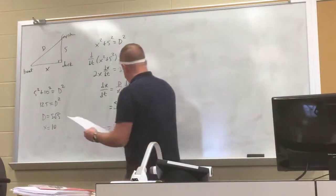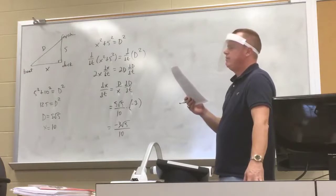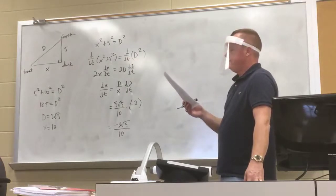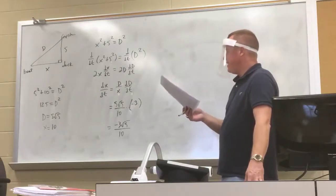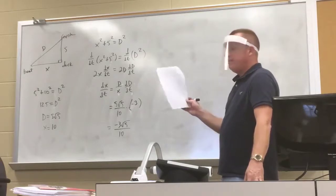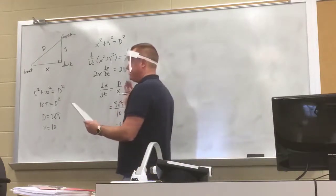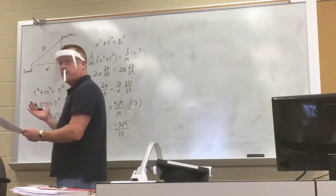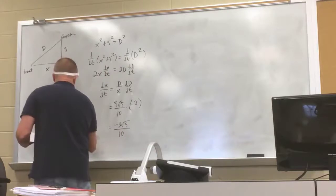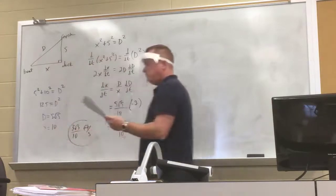The negative indicates the boat is moving toward the dock. Since the question asks how fast the boat is traveling — which is speed, always positive — the answer is 3√5/10 feet per second.